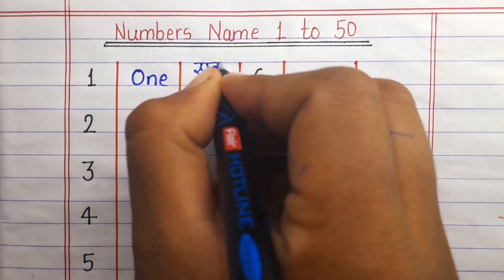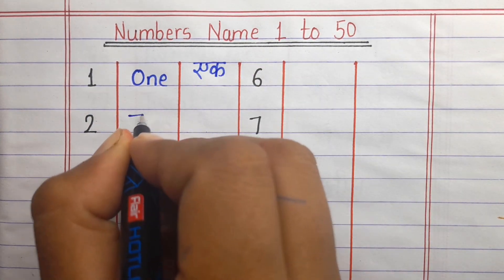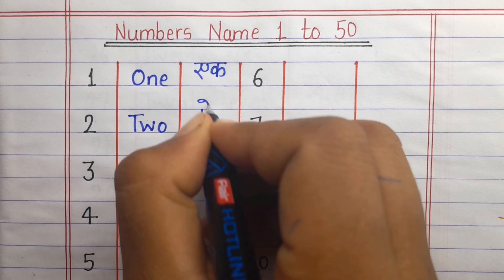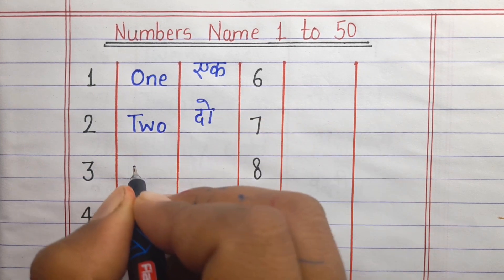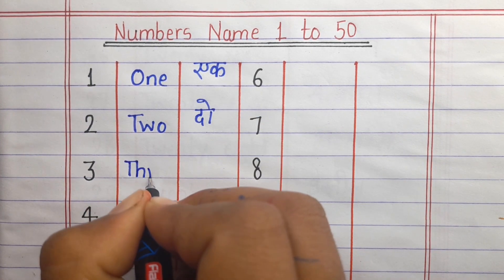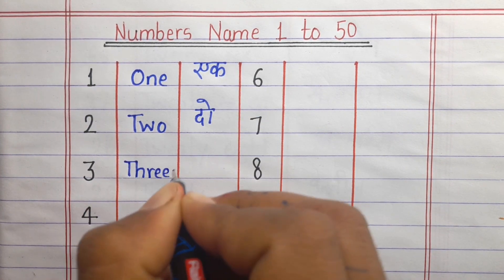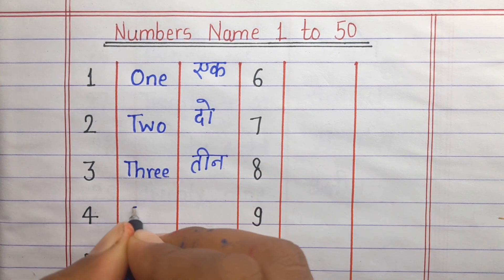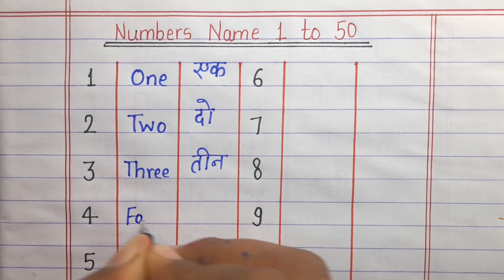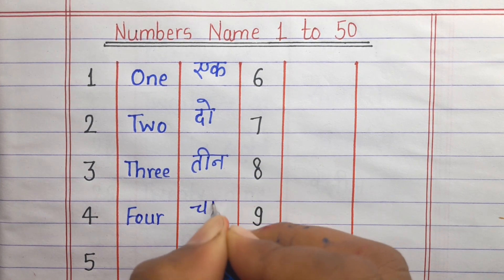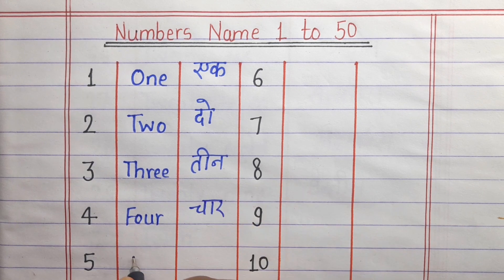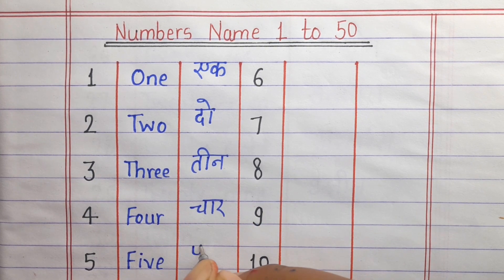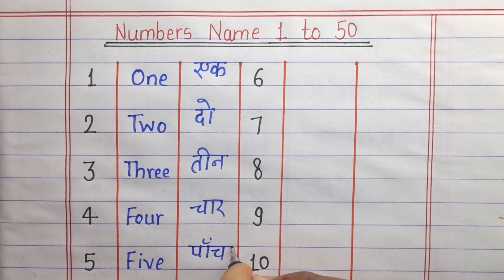1 - Ek. 2 - Do. 3 - Teen. 4 - Chaar. 5 - Paanch.